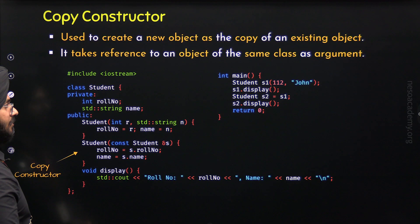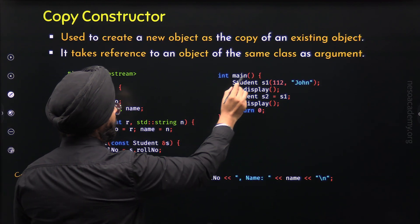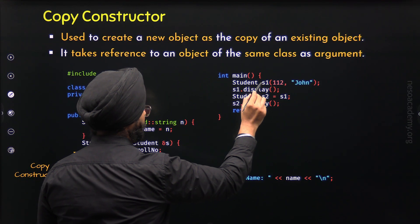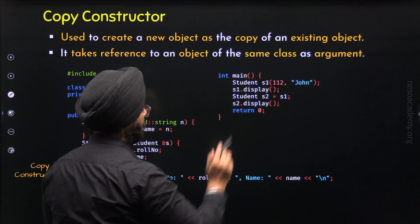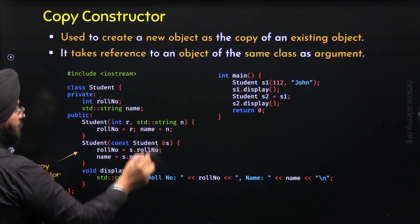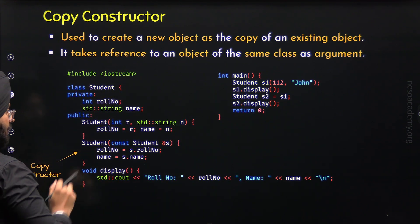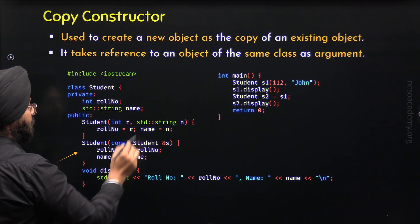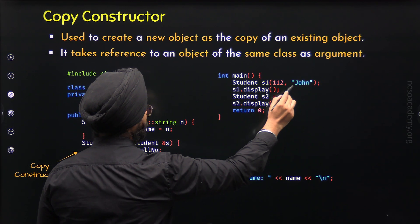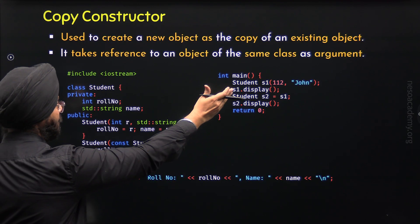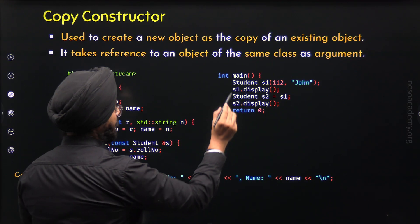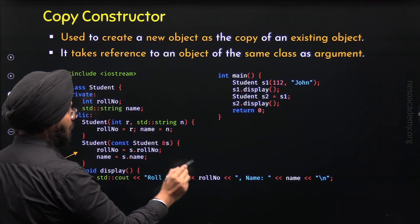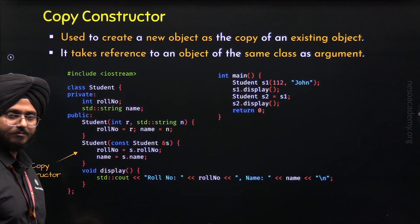So this is the class Student. Here we have the main function. Inside the main function, I have defined the object s1 of class Student and initialized it with values 112 and John. Clearly, the parameterized constructor will be called and these parameters will receive these values. This means role number associated to object s1 will receive value 112, and name associated to object s1 will receive the string John. This is what we have already learned in our previous lectures. Through the s1 object, I am calling the display function, so we will get the output as role number 112 and name John.